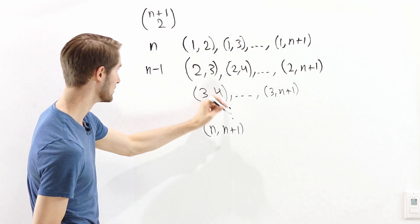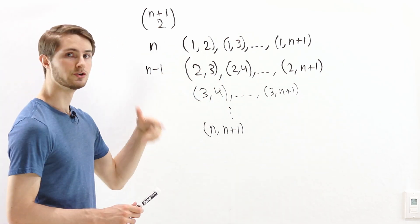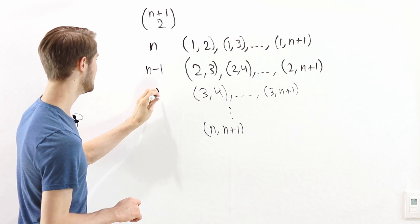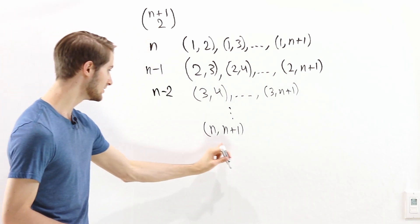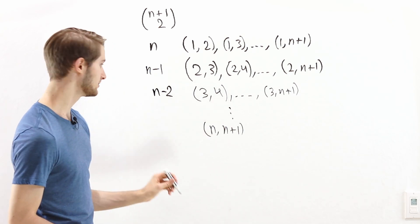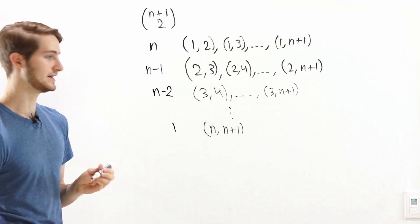After that, we start with a 4 instead of a 3. So again, there's 1 less. And that means we have n minus 2 pairs in this row. And we keep going all the way down until finally n comma n plus 1. There's only one pair in that row.